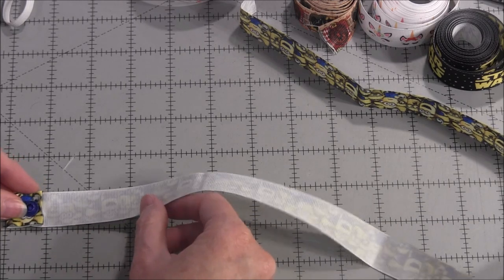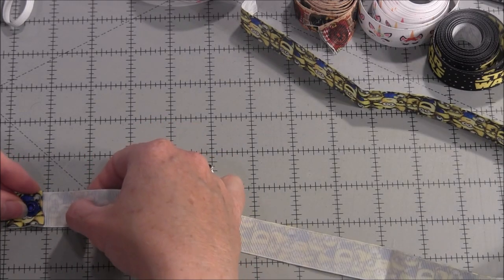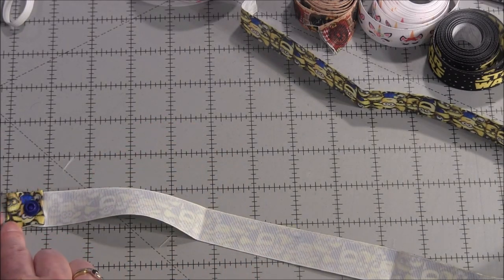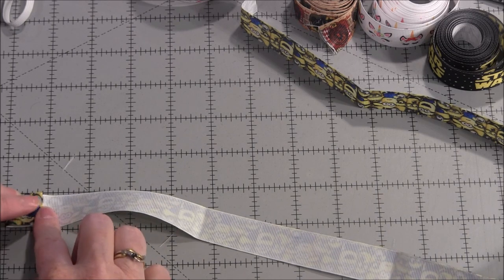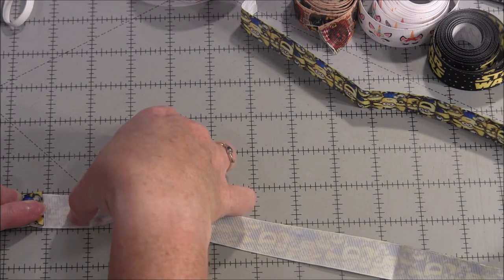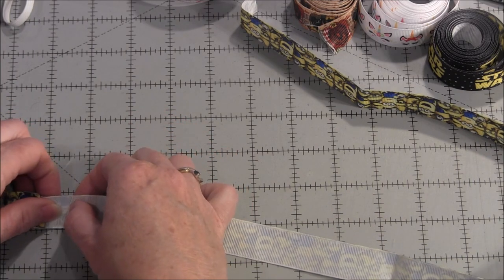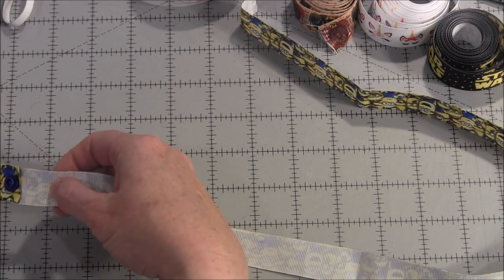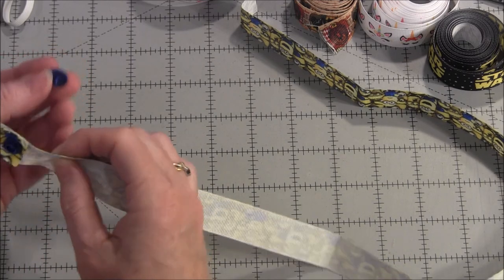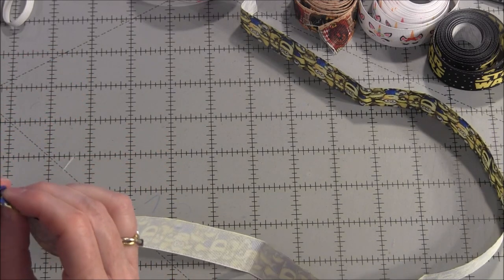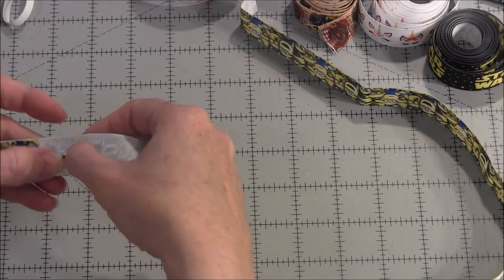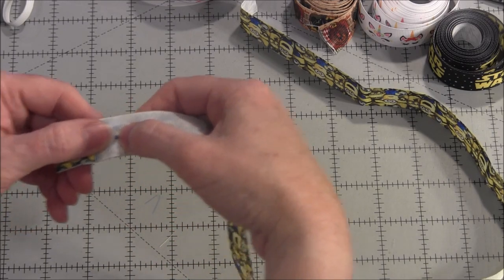Next we need to put the other side of the snap down the ribbon here. I found the best spot to put it is if you line up the end of the ribbon and measure out one and a half inches approximately. We want to put the snap right there. Again, take the pointed side of the snap. On this side you can usually just poke it right through the ribbon because it's only one layer.